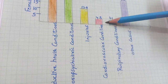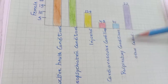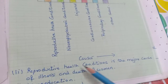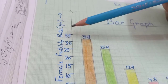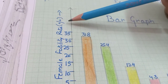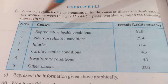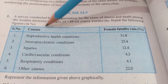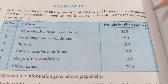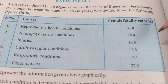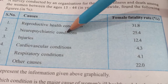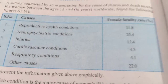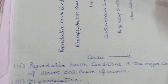फिर उनके नीचे reasons लिखेंगे: reproductive health conditions, injuries, cardiovascular conditions, respiratory conditions, other causes — ये सारे causes थे। इस side पर जो हमने scale decide किया है वो female fatality rate in percentage show कर रहा था। Causes को x-axis पर as it is लिखना है — x-axis पर हमेशा causes लेते हैं जिनके class intervals नहीं होते, और y-axis पर length of bars लेते हैं।